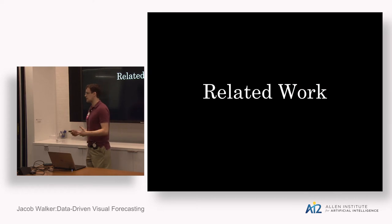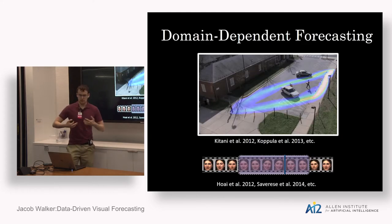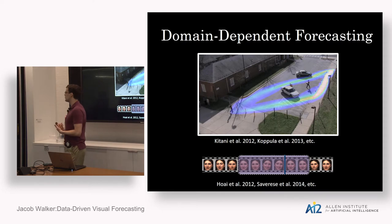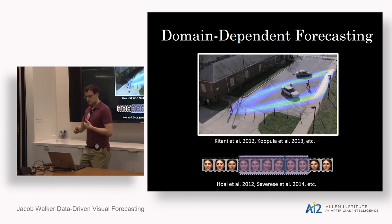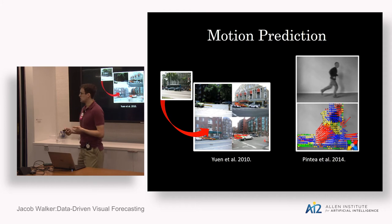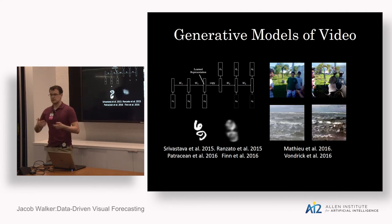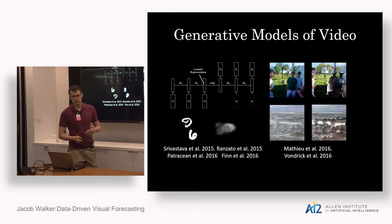First, a quick segue into related work. There are a lot of related ideas out there. There's domain-dependent forecasting, where people have thought about predicting events in very specific contexts like pedestrian trajectories, as well as detecting or classifying action classes as they occur or before they occur in video. There have also been initial approaches to motion prediction, such as nearest-neighbor approaches or structured random forests. This is also related to generative models of video — ideas like generative adversarial networks, variational autoencoders, pixel CNNs — applied not only to generating images but also to generating video.